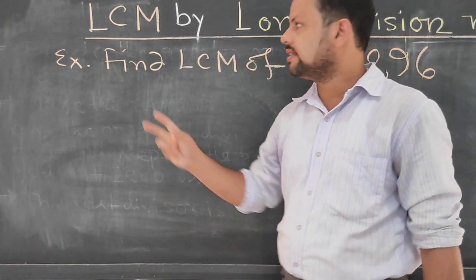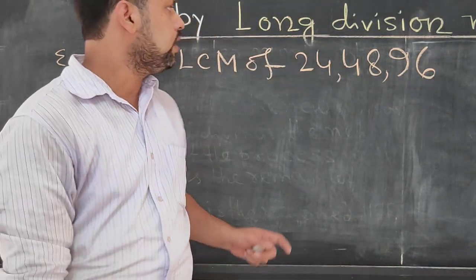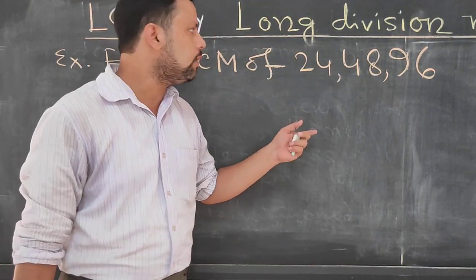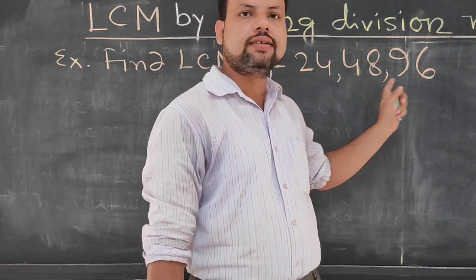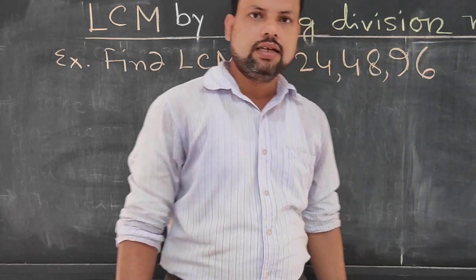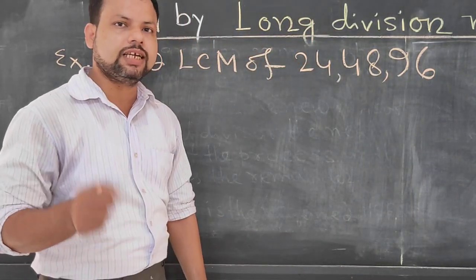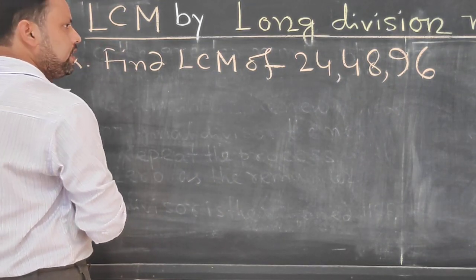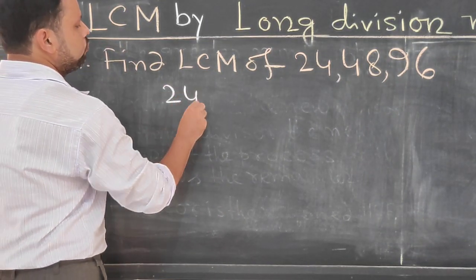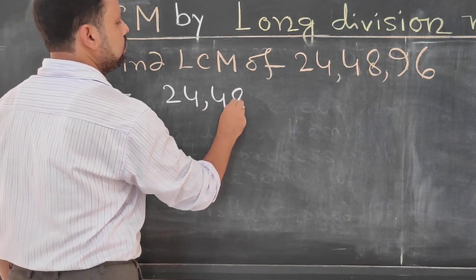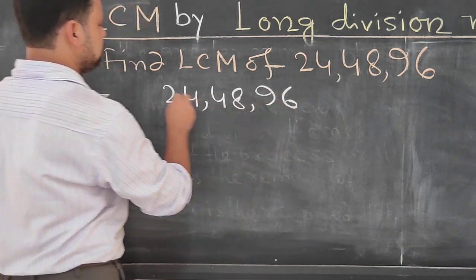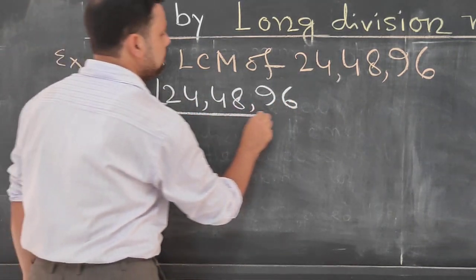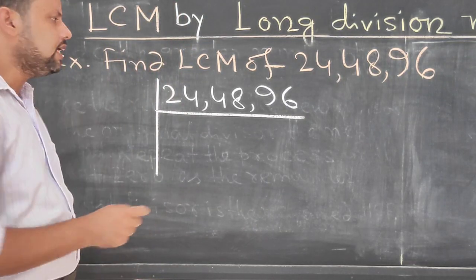I have already taken one example. Here we have to find LCM of 24, 48, and 96. In long division method, step by step I will explain. First, in line, we have to write 24, 48, and 96. So I have copied all the numbers. Now we have to divide here.